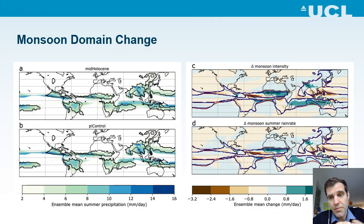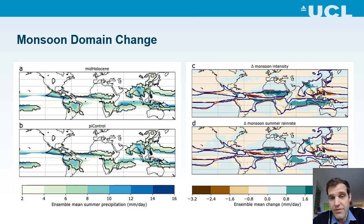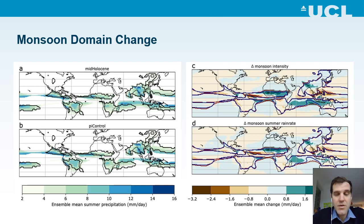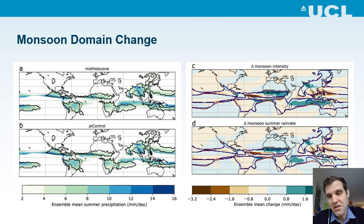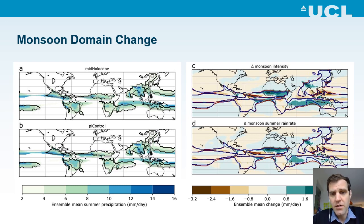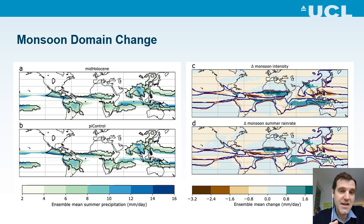We've gone a bit further than just looking at rainfall changes to actually look at definitions of the monsoon. The monsoon domain is defined as where the local summer is wetter than the local winter, with a substantial amount of rain taken as 2.5 mm per day on average over a five-month-long summer season. What you can see is that fundamentally the monsoons stay pretty much in the same place across the globe, with some slight variations in their location.